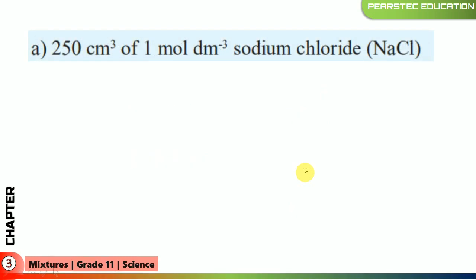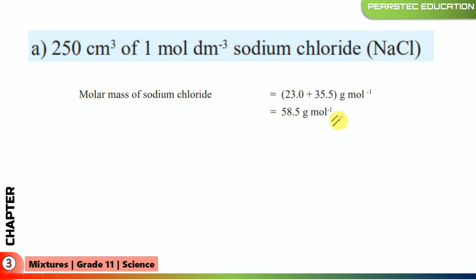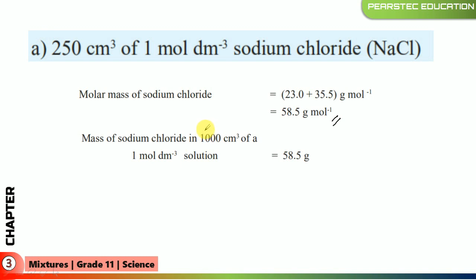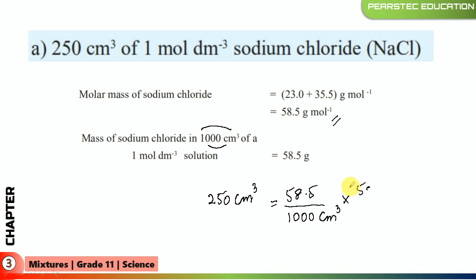Now for 250 cubic centimeters of a 1 mol per cubic decimeter sodium chloride solution: the molar mass of sodium chloride is again 58.5 grams per mole for 1000 cubic centimeters. For 250 cubic centimeters, we calculate 58.5 ÷ 1000 × 250.